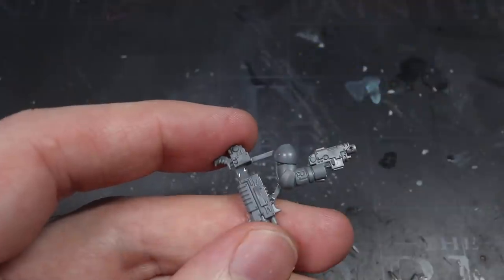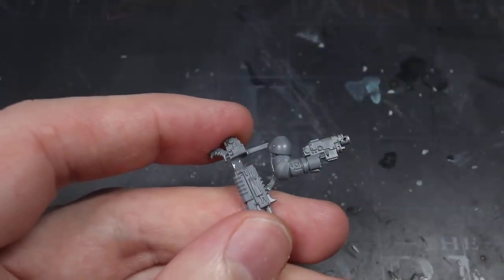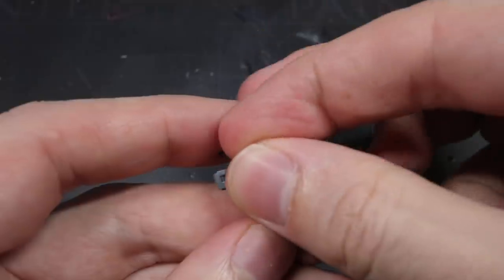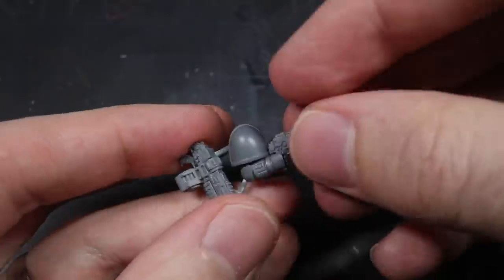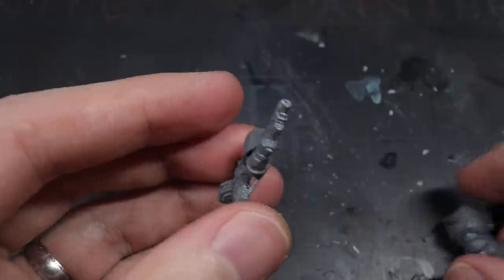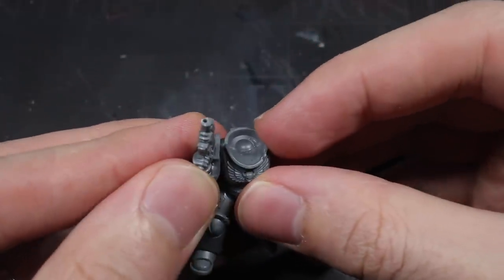For the right arm, I didn't do anything special other than using one of the arms that carried a bolter one handed in order to match the pointing left arm. After attaching the magazine to the bolter, I then attached a regular shoulder pad in the same way as I did before.